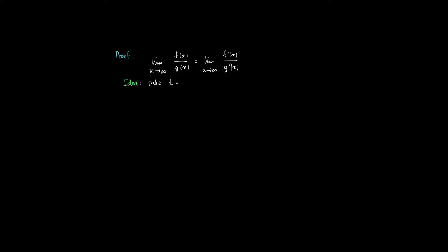So if x tends to infinity, then t tends to 0+. Now we substitute in the limit for x to infinity: f(x)/g(x) becomes the limit as t tends to 0+ of f(1/t) divided by g(1/t). Notice that now we're in a former version of L'Hôpital's rule, where we take a limit to a fixed point at the boundary of an interval.